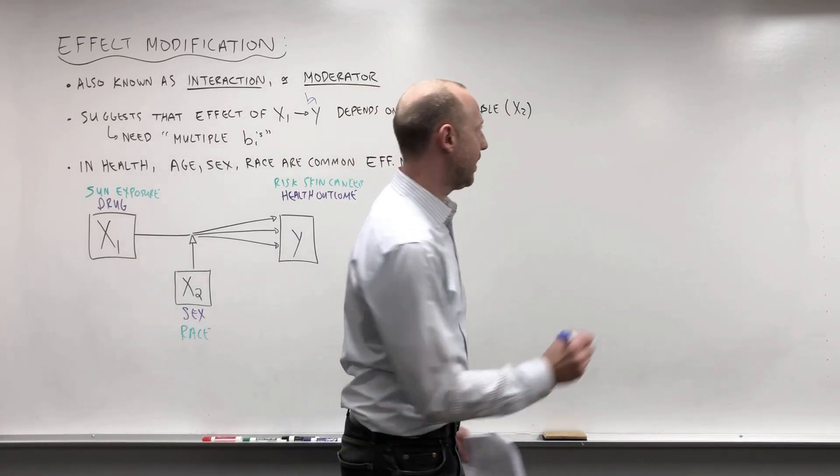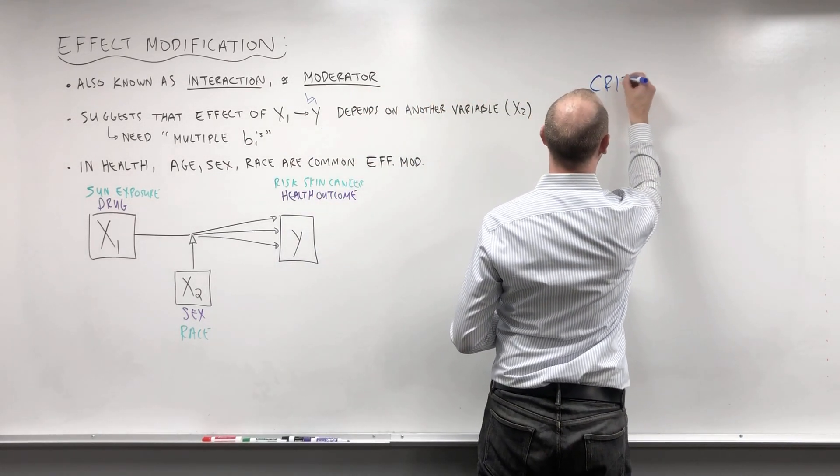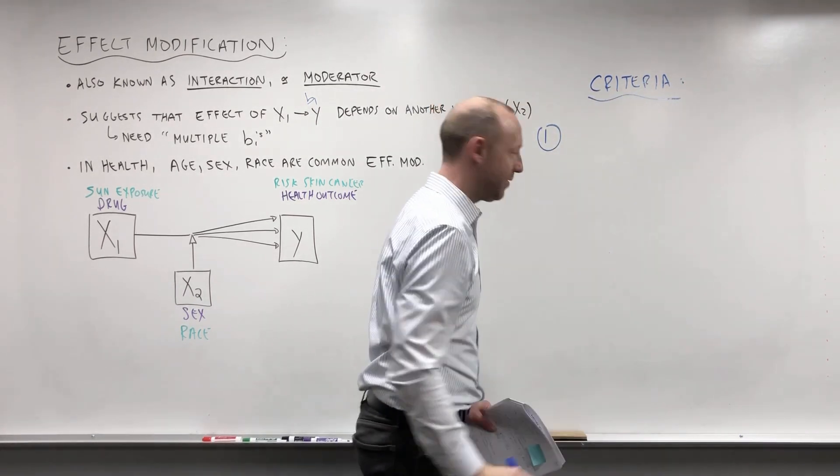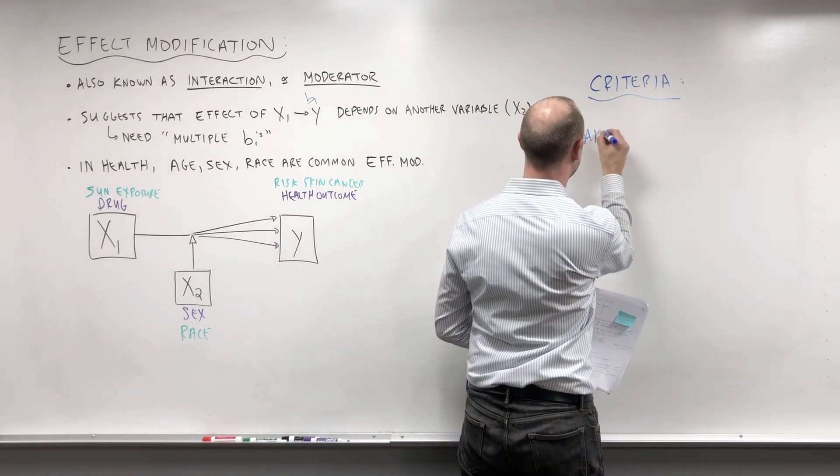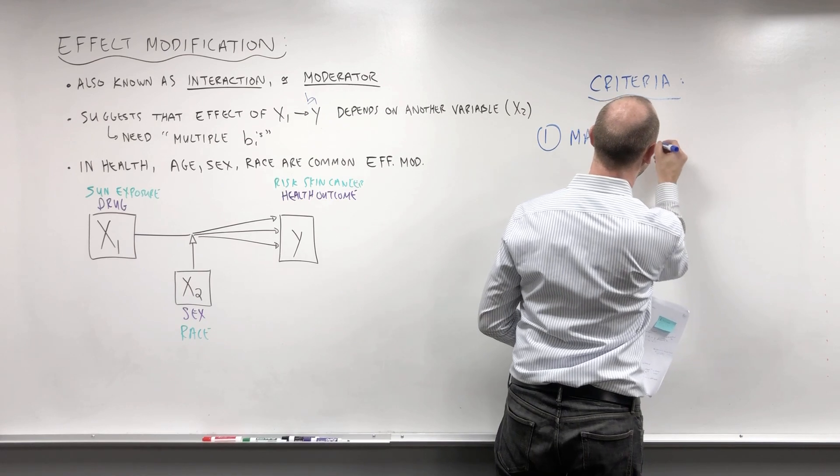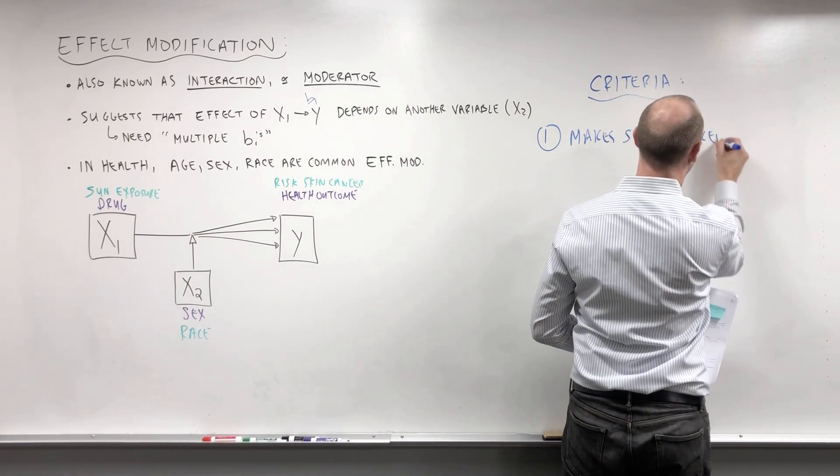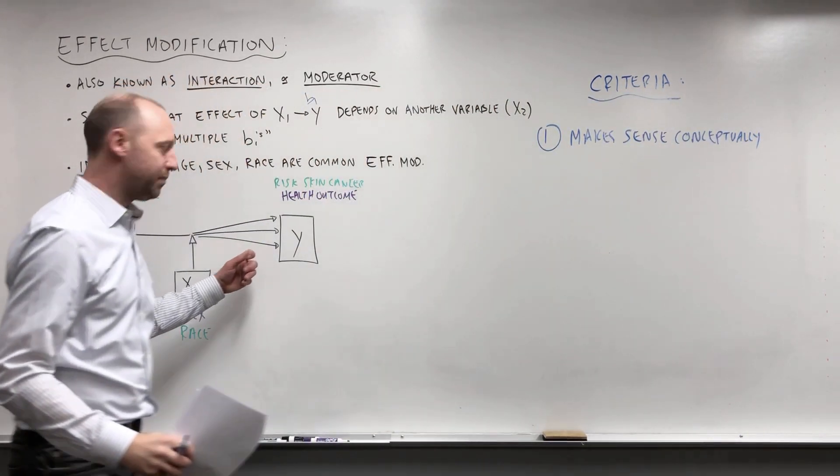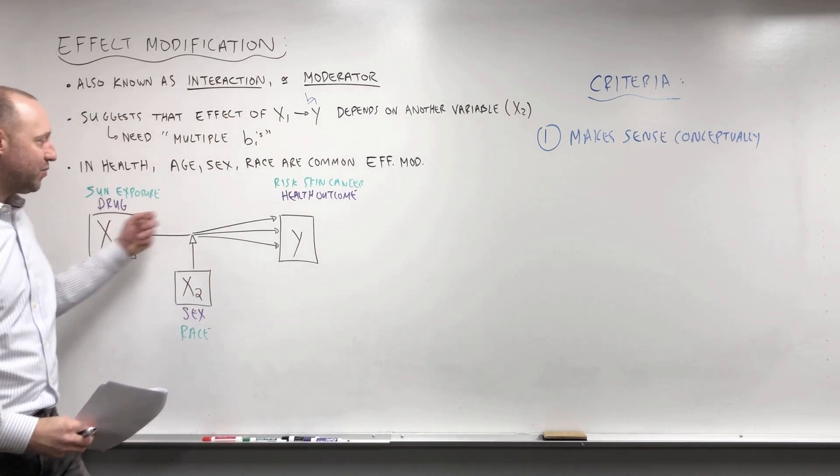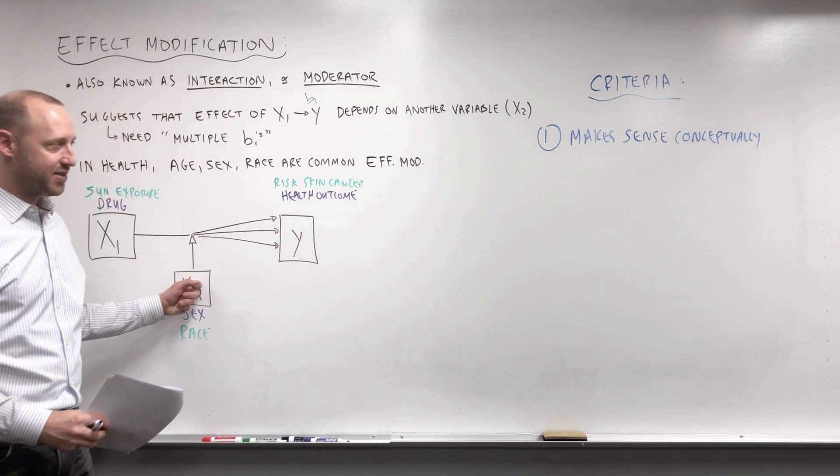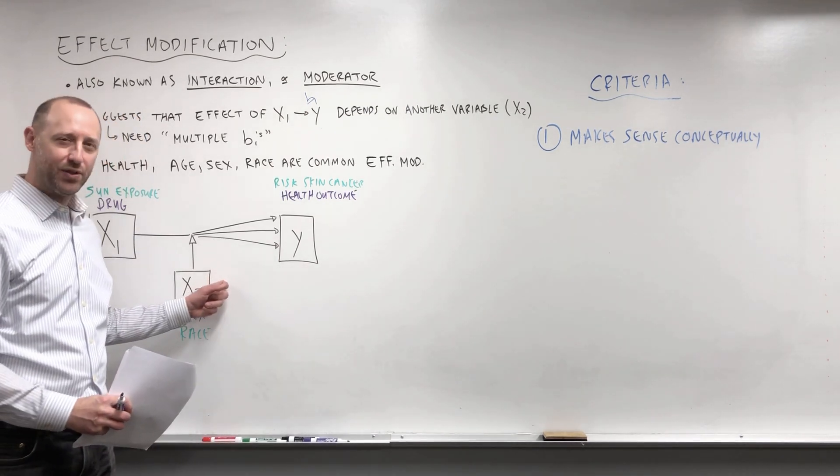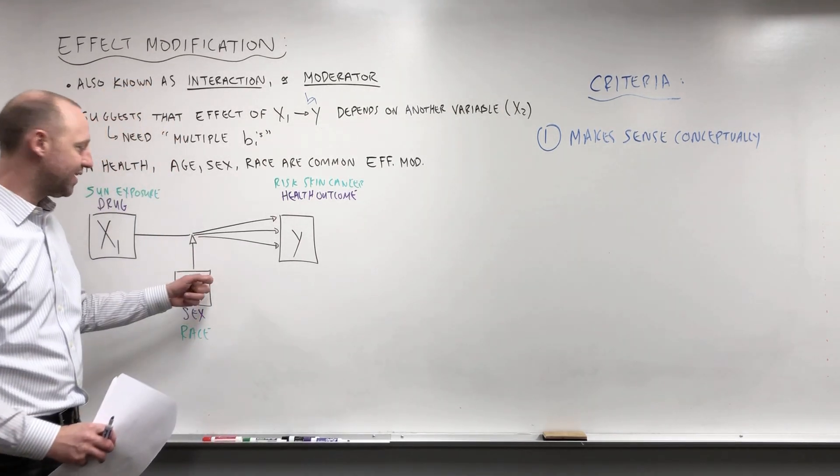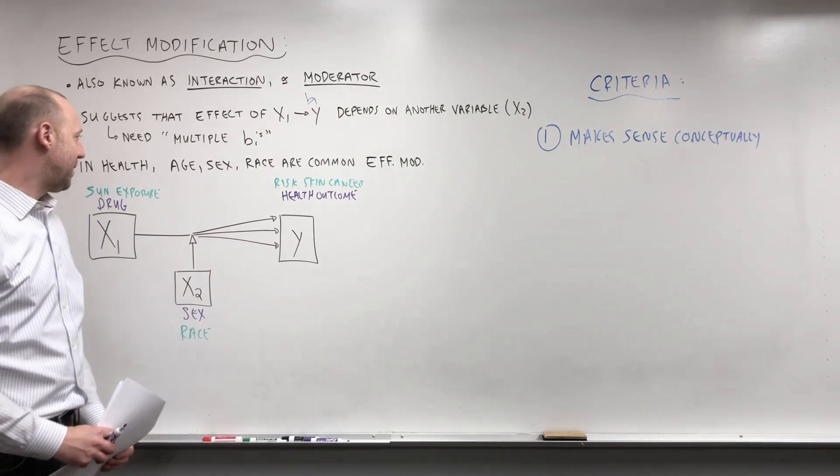Let's write down the criteria. And the first one, I'm sure you can guess by now, makes sense conceptually. So this diagram makes sense conceptually that the effect that x1 is having on the outcome could be modified by x2. We don't need to know for sure if it is, but if we knew everything we wouldn't be collecting data and fitting models. But hypothesizing that it could be an effect modifier, that makes sense.